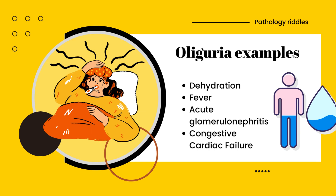What are the examples of oliguria? It can happen in cases of dehydration, fever, acute glomerulonephritis, and congestive cardiac failure.